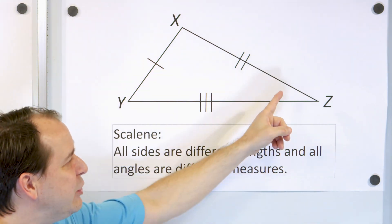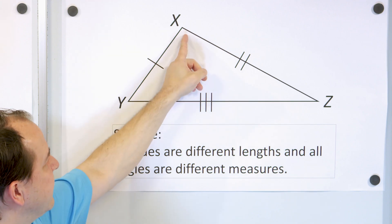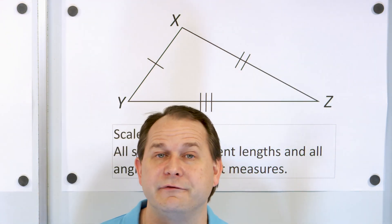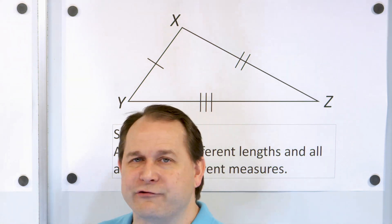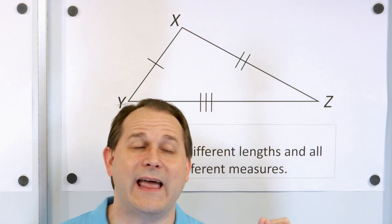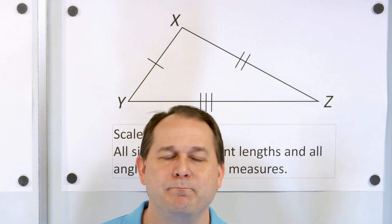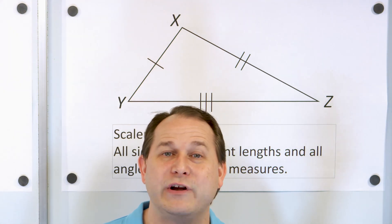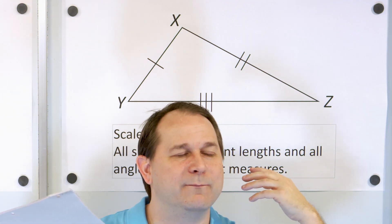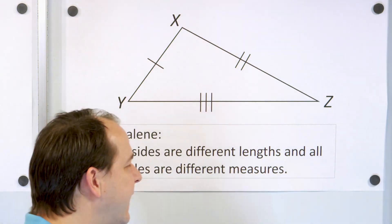Even in a scalene triangle, if I knew what each angle was and added them all up, you're always going to get 180 degrees. Even though all these triangles look different, if you add all the angles up inside, they always equal 180 degrees. I keep saying it because it's something you're going to use forever — in physics, in calculus, all kinds of things.